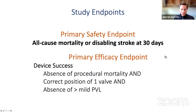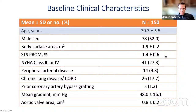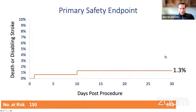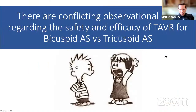Basil Ramlawi then presented the Evolute Low-Risk Data at ACC 2020. Primary safety endpoint: all-cause mortality and disabling stroke at 30 days. This patient population — again 150 patients — had considerably lower age than the European cohort, STS 1.4%. The primary safety endpoint of death or disabling stroke was impressively low at 1.3%. But if we delve into that data, the combination of disabling and non-disabling stroke in a patient population with mean age 70 years of 4% is, to my mind, still too high, and does not match what our surgical colleagues can provide.